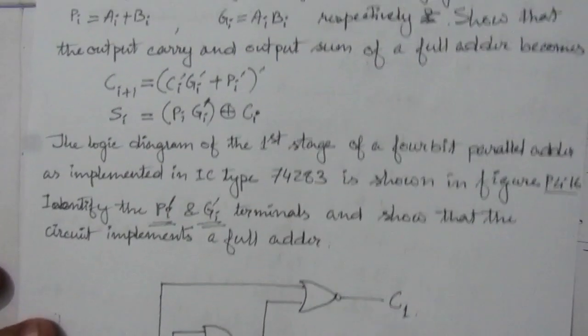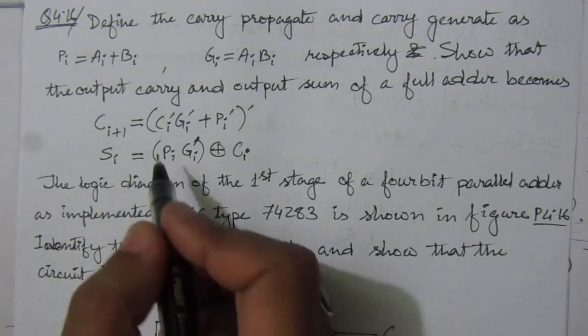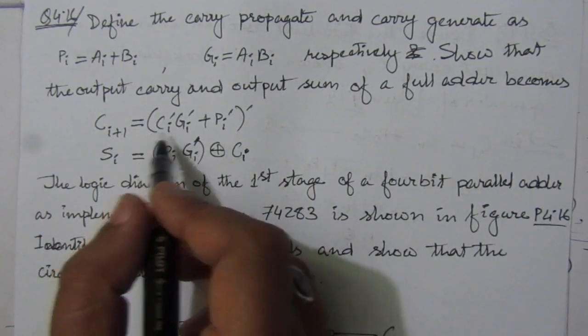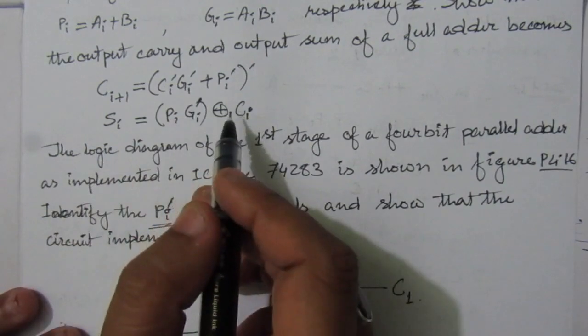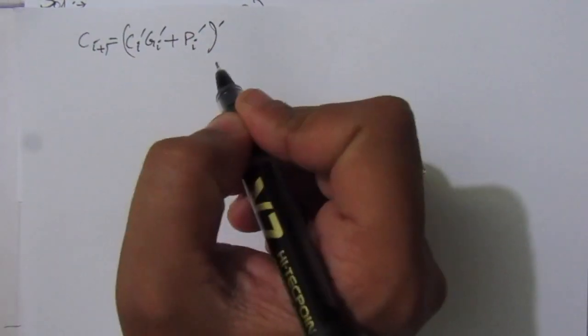Now let us see the right hand side of the problem — the next carry and the sum output. We have to express the next carry in terms of the present carry-in, and the carry propagate and carry generate. We have to prove these two expressions. We need to prove that C_{i+1} equals C_i dash, C_i dash, plus P_i dash, whole complement. This is the next carry.